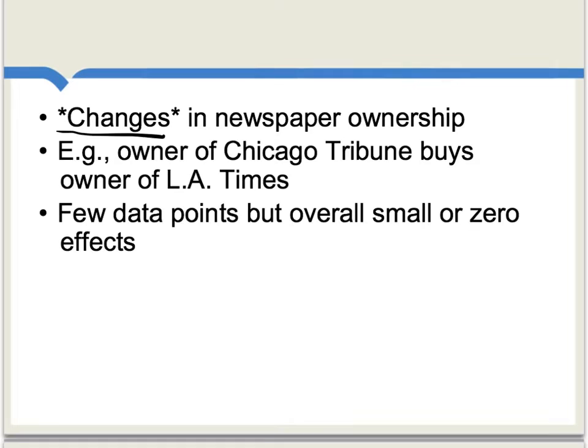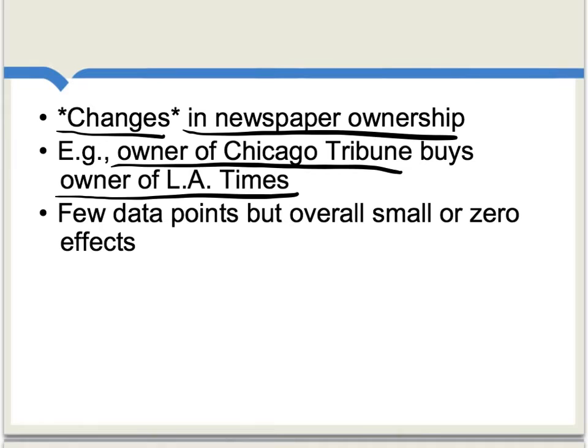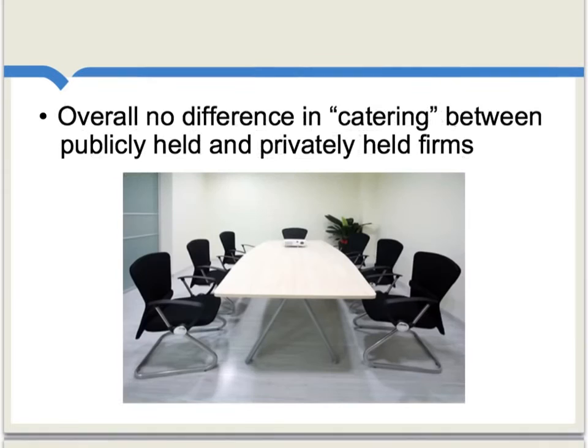Another way to examine the question of whether ownership matters is to look at changes in newspaper ownership. For instance, there was a case where the owner of the Chicago Tribune bought the company which was the owner of the LA Times, and then you can see whether the papers adjust their political orientation. There are not so many data points on this question in this research paper, but overall, the authors find a small or zero effect.